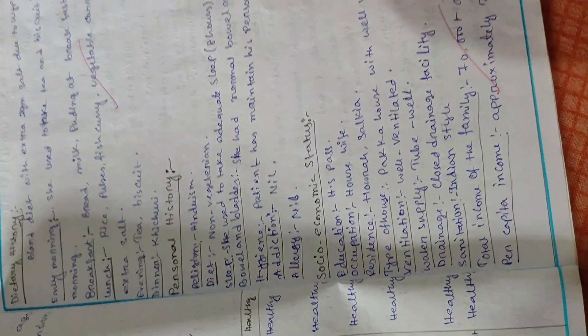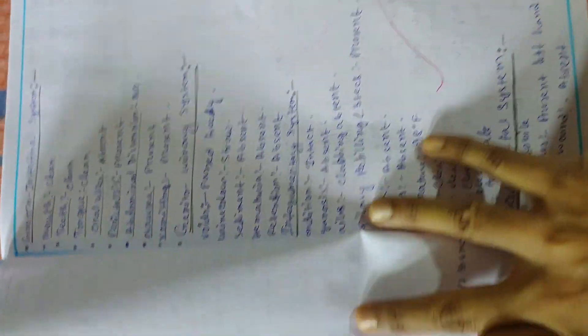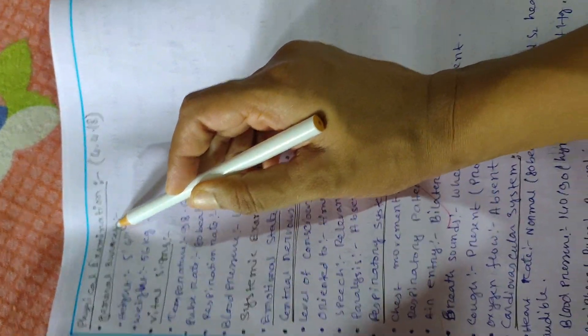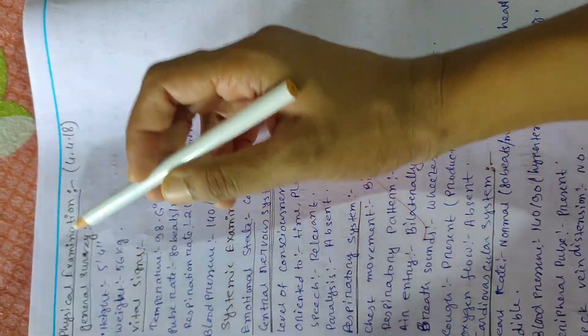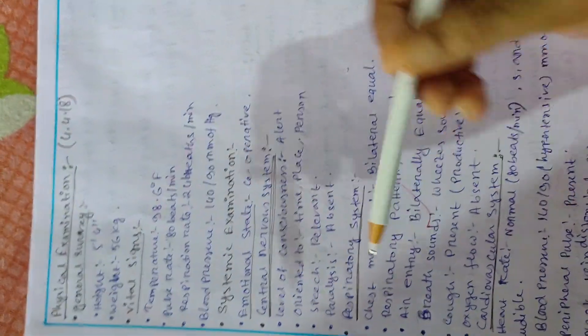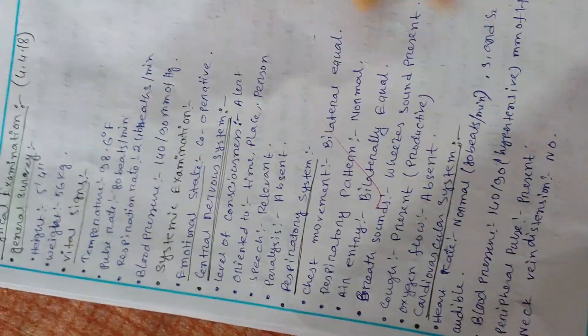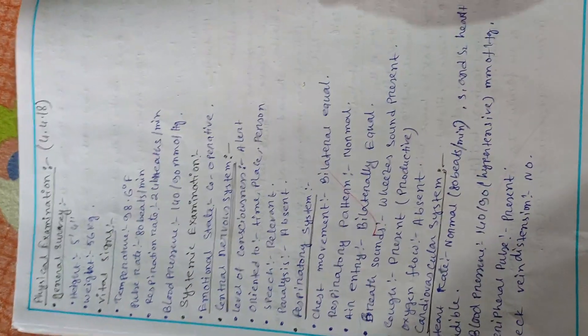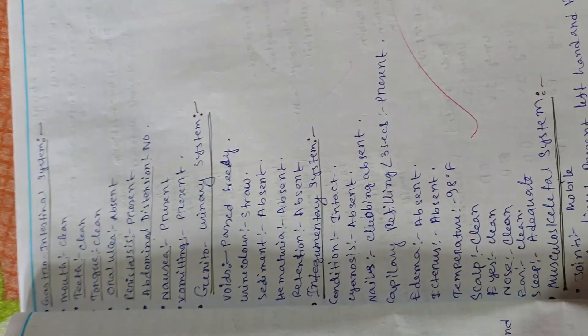After history, the next point in the nursing care plan is physical examination. All system examinations should be included — central nervous system, respiratory system, cardiovascular system, and all other systems — as per the physical examination format. All explanations should be detailed in the nursing care plan.